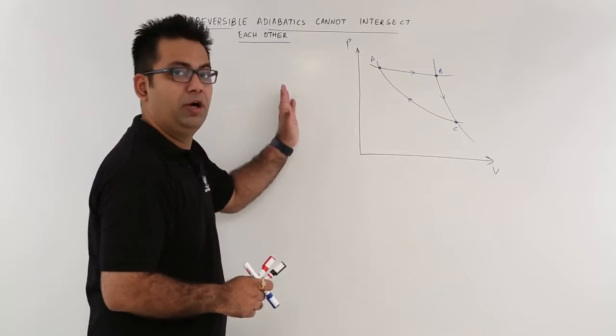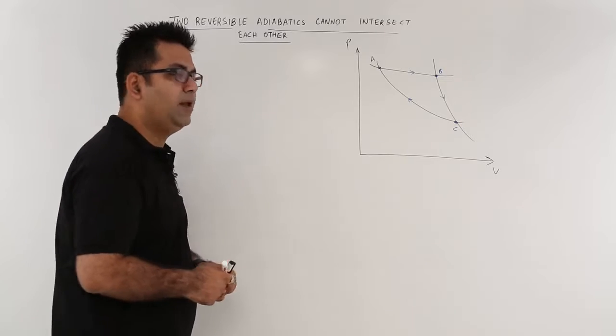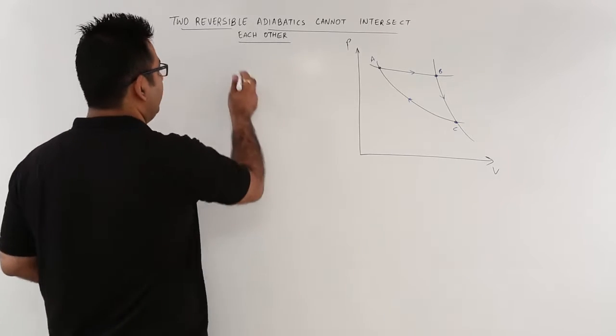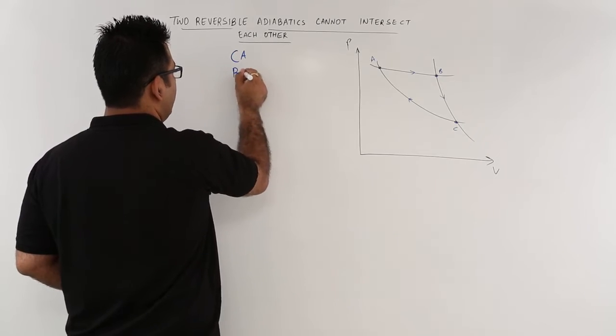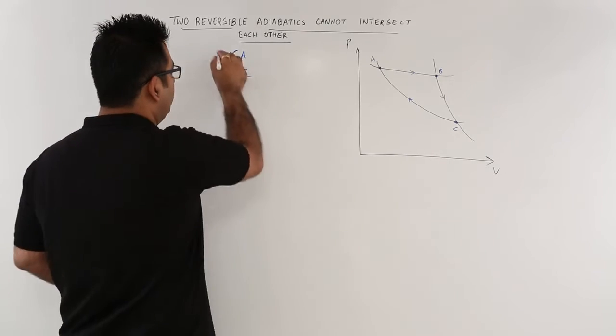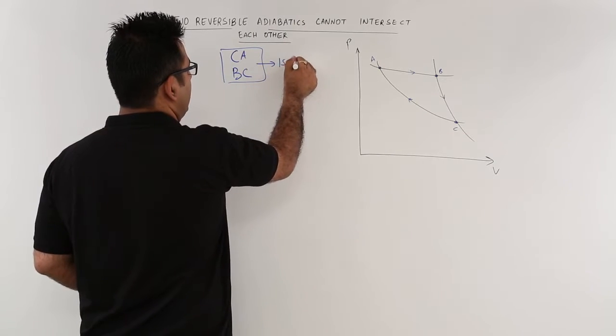Let's have a look at this plot, which is a PV plot. So we have two reversible adiabatics. The first reversible adiabatic is CA and the second one is BC. So both of these are reversible adiabatics or you can say isentropic lines.